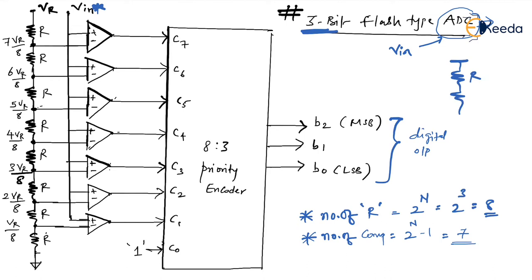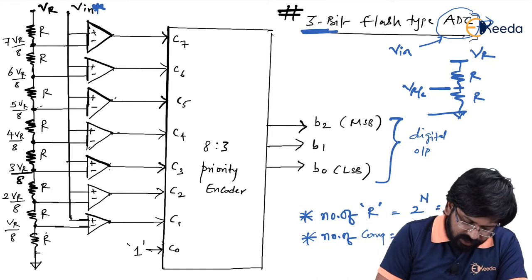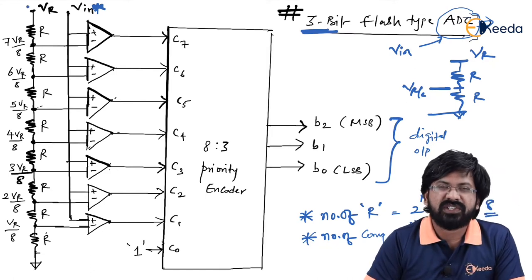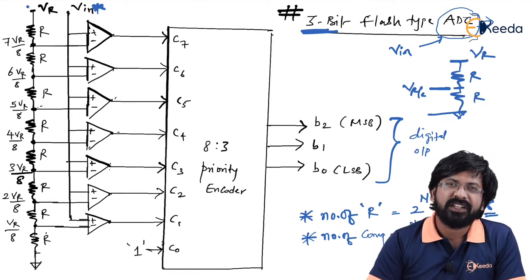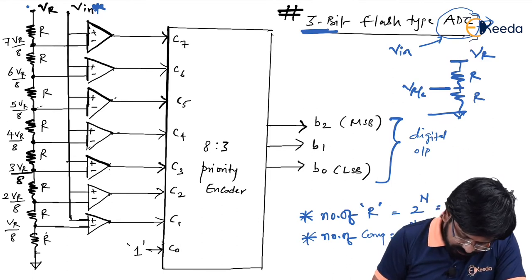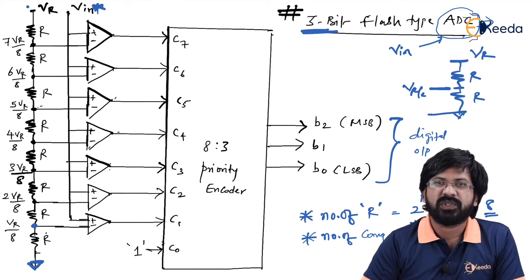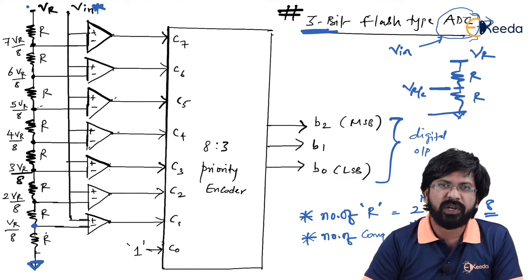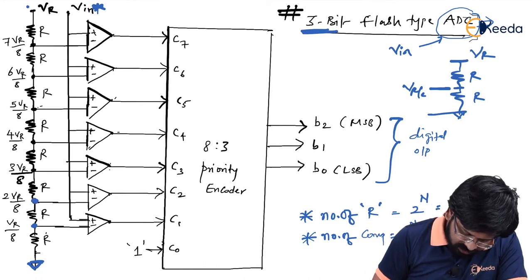To understand the voltage divider: consider two equal resistors R and R with the lower end at ground and total voltage VR across them. Because the resistors are equal, the voltage across one R is exactly VR by 2. Similarly, the total reference voltage VR is divided equally across 8 resistors, giving VR by 8 across each resistor.